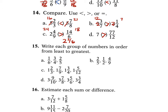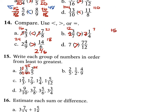For problem 15, ordering fractions from least to greatest. For A, we have 1 sixth, 3 fourths, and 2 fifths. Using LCD of 60: 1 sixth is 10 over 60, 3 fourths is 45 over 60, 2 fifths is 24 over 60. So least to greatest: 1 sixth, then 2 fifths, then 3 fourths.